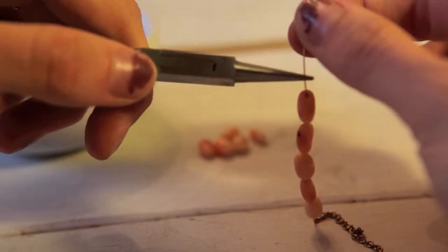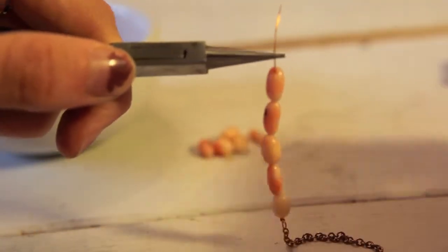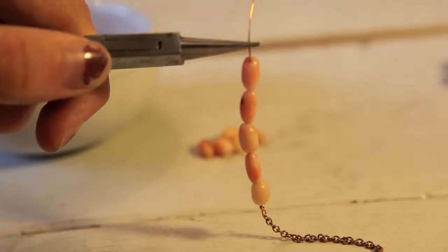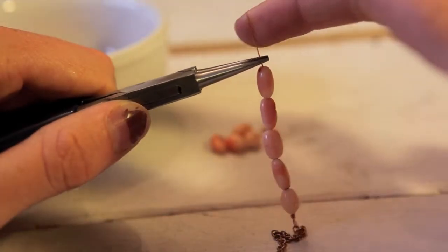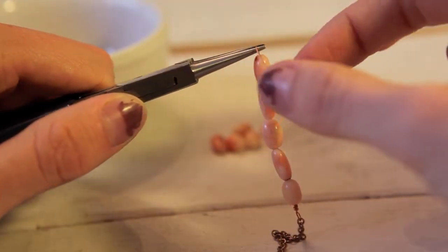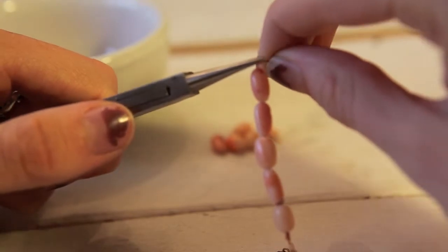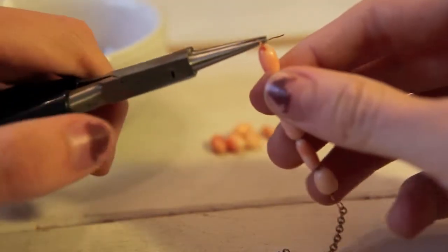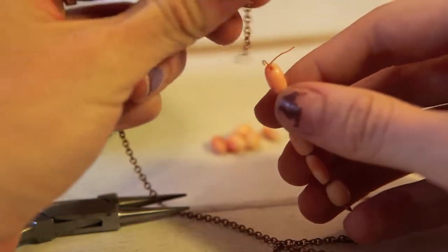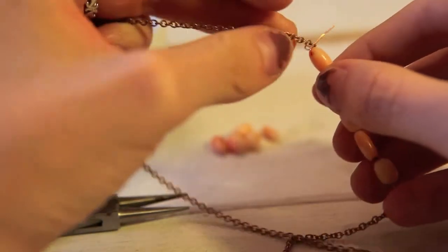Grasp wire about one eighth of an inch above the last bead. Repeat the steps used to make the first wire loop in order to make the second wire loop. Make a cursive L-shaped loop and remember to insert the other side of the chain into the second loop before coiling.